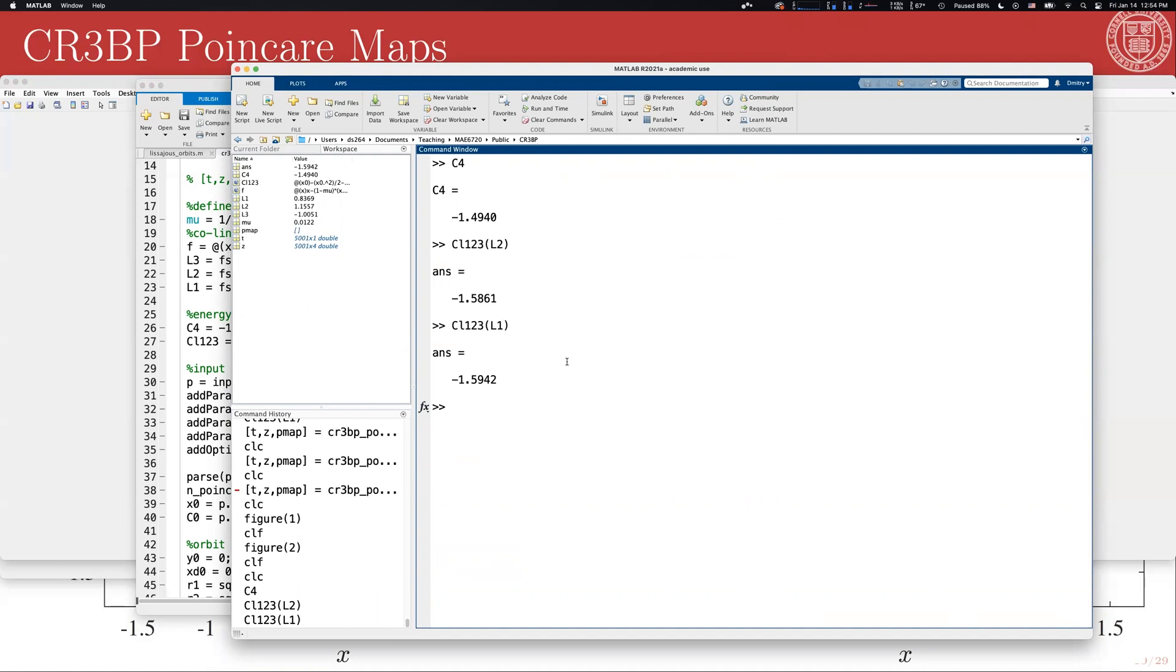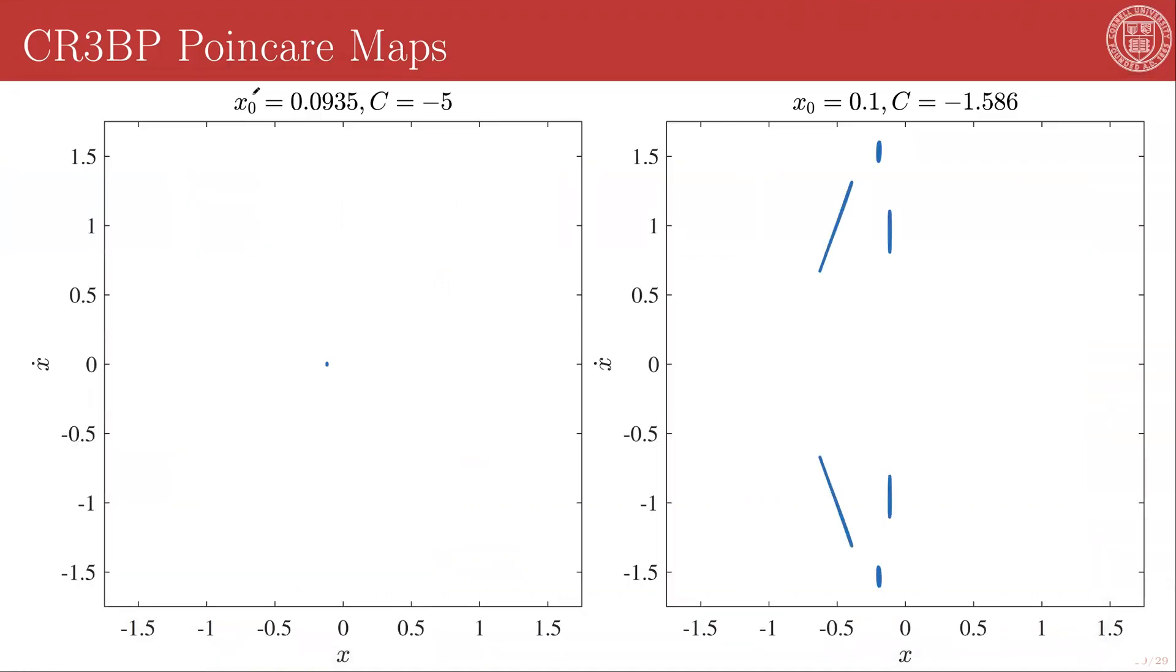We're going to start by looking at the recurrence map for a system that has an initial position of x0 equal to 0.0935, and a Jacobi constant value of negative 5. This means we are initializing our test particle very near the first primary, very near the barycenter, very near the larger of the two masses, which is the Earth. What we're setting up is kind of a medium-sized Earth orbit. And the recurrence map shows us essentially a single spot.